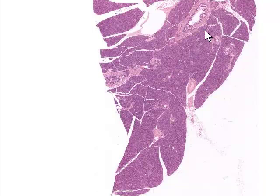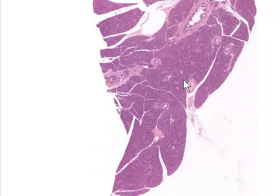At this low magnification, it's a good opportunity to point out that the ducts which drain the pancreas are classified as two different types. There are interlobular ducts — ducts between lobules — such as this one here, and this one here. These are ducts found in the connective tissue that separates lobules. Then there are intralobular ducts, which we'll see when we increase magnification.